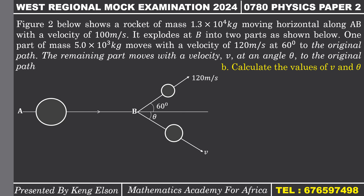According to the problem, we have a rocket that was moving with an initial velocity of 100 meters per second along AB. When it arrives at B, it explodes and separates into two parts. The first part moves with a velocity of 120 meters per second at an angle of 60 degrees with the horizontal original path, and the second part moves with velocity v at angle theta. We call the original rocket mass m, and after the explosion the two parts have masses m1 and m2 respectively.